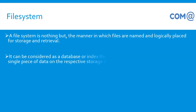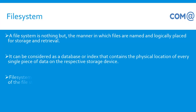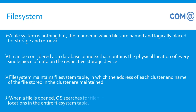A file system is the manner in which files are named and logically placed for storage and retrieval. It can be considered as a database or index that contains the physical location of every single piece of data on the respective storage device. The file system maintains a file system table in which the address of each cluster and the name of the files stored in the cluster are maintained.